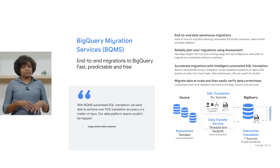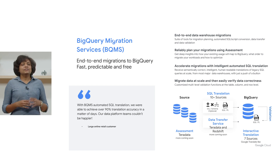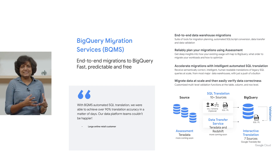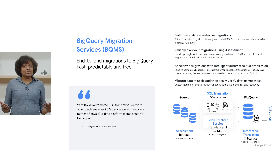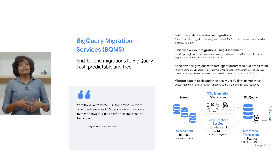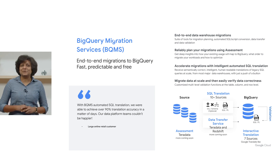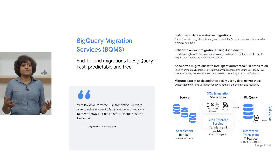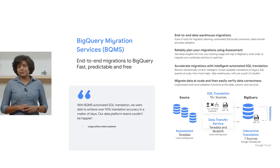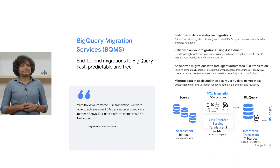Translations can be run in batch mode at scale or in a Google Translate-like interactive translation mode where you're learning and debugging. The interactive translation mode is a handy tool for data analysts to quickly familiarize themselves with the power and simplicity of BigQuery. Third is Data Transfer Service, which enables at-scale data transfer from source warehouse to Google Cloud — currently supported for Teradata and Redshift, with more sources being added soon. Finally, data validation lets you verify the correctness of migrated data via customized multi-level validation functions at the table, column, and row level. New validation rules can easily be plugged in, and it's integrated with Cloud Functions, Cloud Run, and Composer for recurring validations.